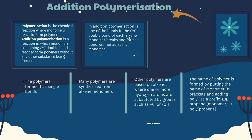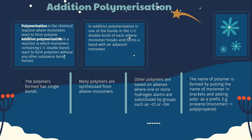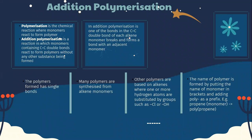Other polymers are based on alkenes where one or more hydrogen atoms are substituted by groups such as Cl or OH. The name of a polymer is formed by putting the name of the monomer in brackets and adding 'poly' as a prefix. For example, propene monomer forms polypropene.